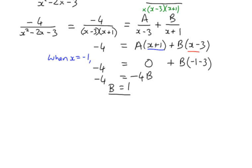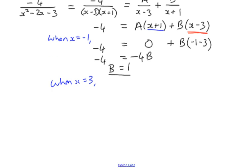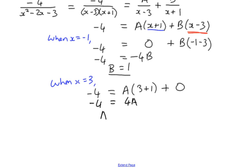Secondly, letting x equal 3: the second term goes to 0, and we get negative 4 equals A times 3 plus 1, so negative 4 equals 4A. Therefore A equals negative 1.